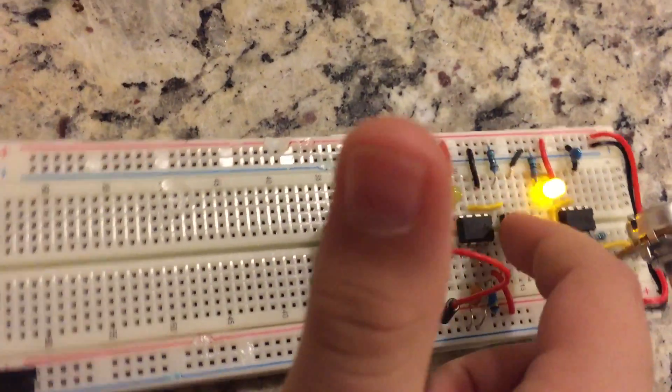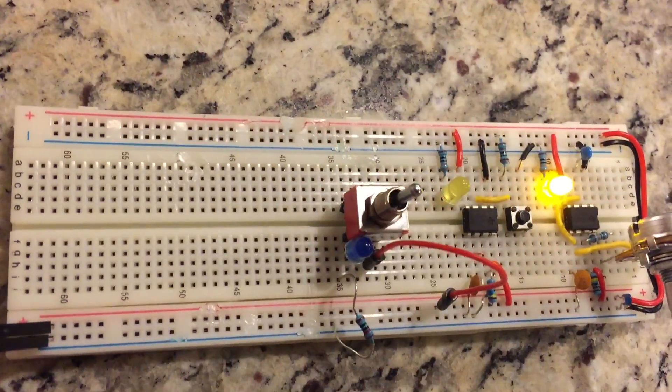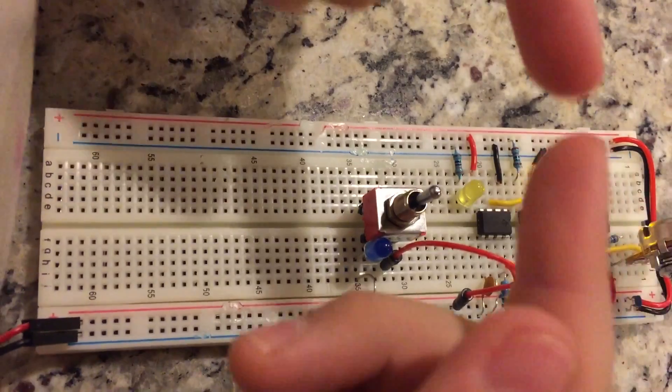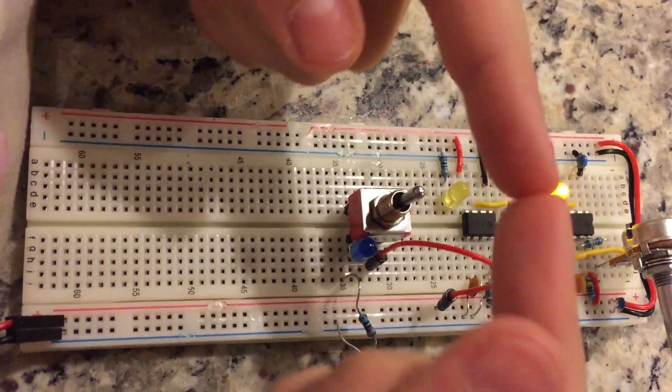So down here we have the debounce button. Basically, when you press down a button, the metal contacts touch, but every now and then they bounce.